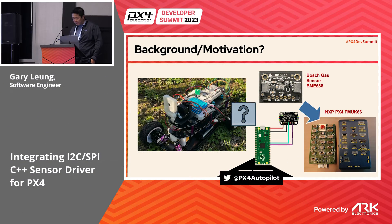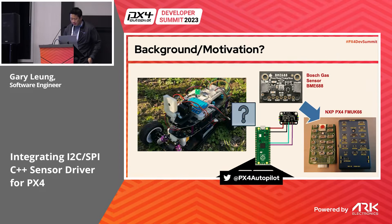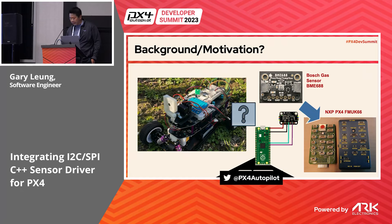One of the requirements was to integrate the BME-688, which has I2C and SPI. Similar to the BME-380 temperature sensor, the key difference is the customizable heat plate that allows you to detect multiple or various gas compositions, which can be used for environmental sensing.